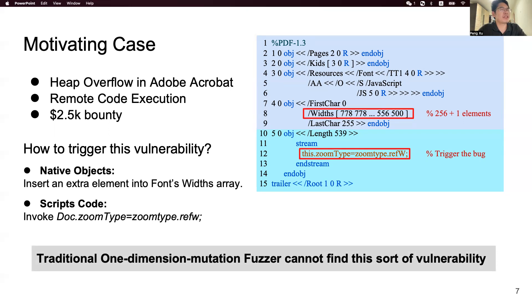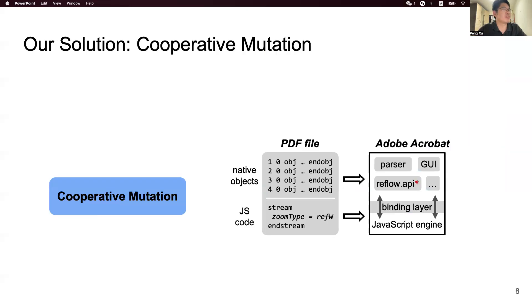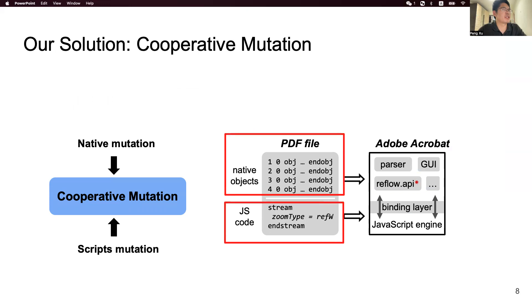Inspired by this vulnerability, we want to design a new effective method to find bugs that are related to both native objects and the script code. Our solution is cooperative mutation. It's very straightforward — we just mutate both native objects and the script code cooperatively.